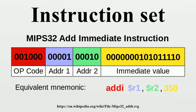The size or length of an instruction varies widely, from as little as 4 bits in some microcontrollers to many hundreds of bits in some VLIW systems. Processors used in personal computers, mainframes, and supercomputers have instruction sizes between 8 and 64 bits. The longest possible instruction on x86 is 15 bytes. Within an instruction set, different instructions may have different lengths. In some architectures, notably most reduced instruction set computers, instructions are a fixed length, typically corresponding with that architecture's word size. In other architectures, instructions have variable length, typically integral multiples of a byte or a half-word.